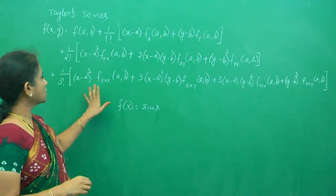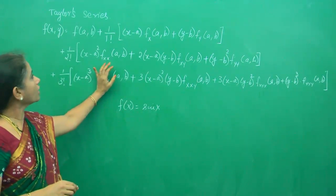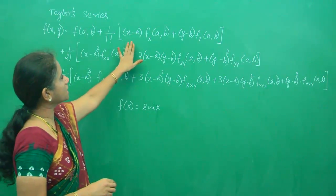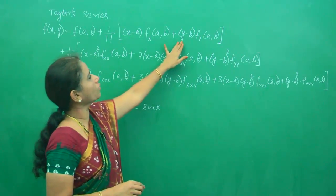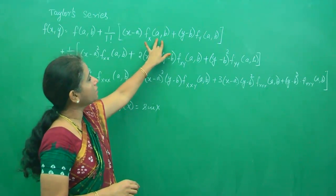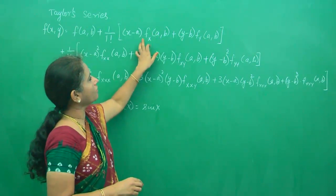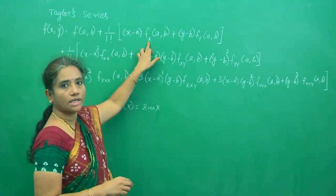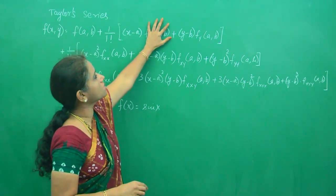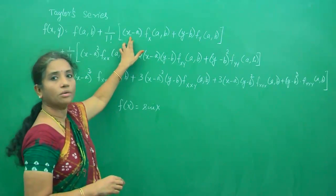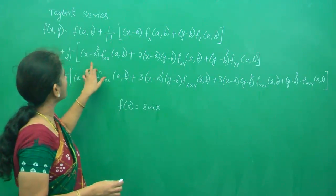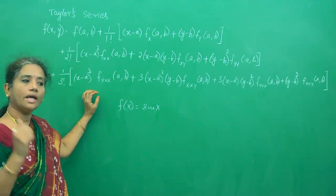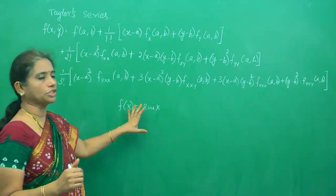Once you write it as an expansion, it is just like a polynomial for you. Look at this — this is the Taylor series expansion. And when you do the expansion, you can see x minus a, y minus b, and the derivative. So f_x(a,b) means first partial derivative with respect to x at the point (a,b). This will be a point, and this is a polynomial — x is there, y is there, and (x minus a) squared will be there.